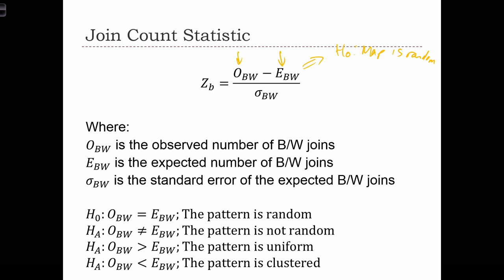The null hypothesis is that the map pattern is random, meaning OBW will equal EBW. We have three alternatives. The non-directional case is simply that the map pattern is not random — OBW does not equal EBW. Or we can have an alternative hypothesis that the pattern is uniform, which gives us a right-tailed test. Or we can have an alternative that the map pattern is clustered, which leads us to a left-tailed test.